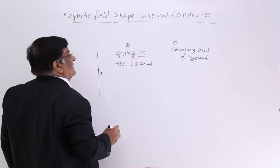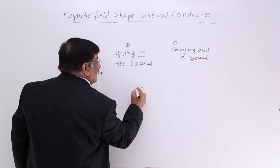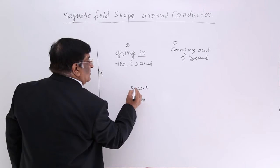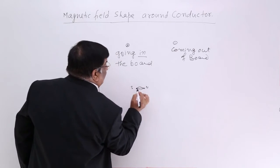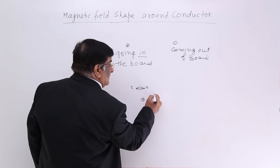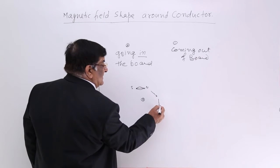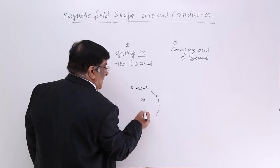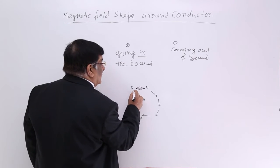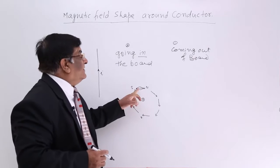Suppose the current is in this direction and I put a magnetic needle here. I find the magnetic needle is in this direction — this is north and this is south. So this is the direction of the magnetic field, because the needle always aligns with the magnetic field. If I put it at different positions around the conductor, I find it stays in different directions — this direction, this direction, opposite to this, and finally in this direction.